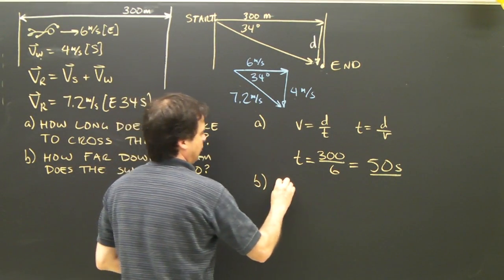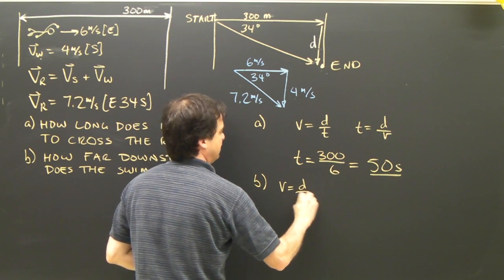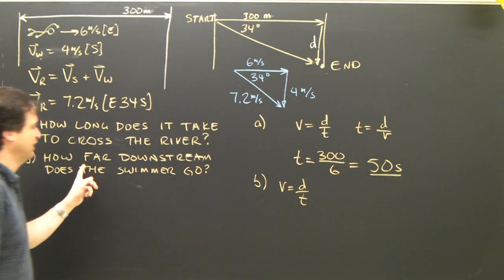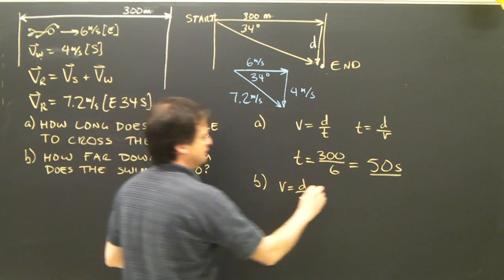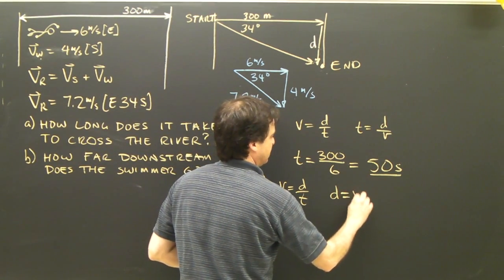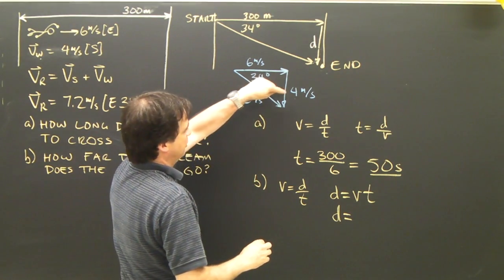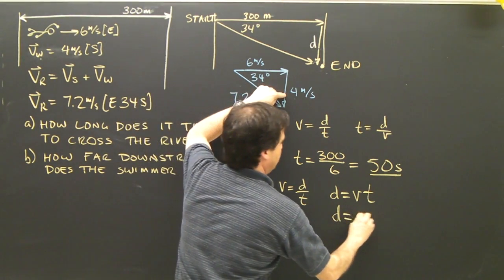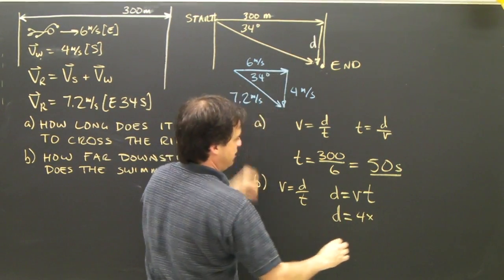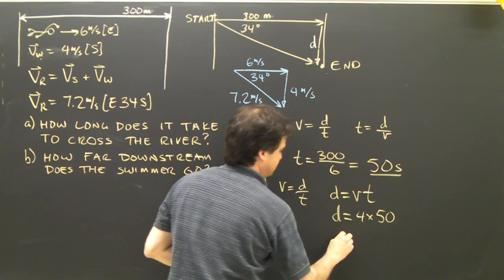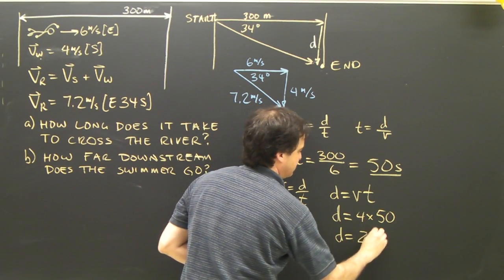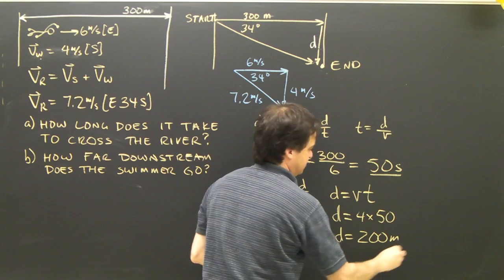So B, I'm going to use the same formula. V equals D over T. This time I'm looking for a displacement or distance. So D, rearrange it, is V times T. So I'm going downstream at 4 meters per second. The time is 50 seconds. So the displacement is 200 meters downstream.